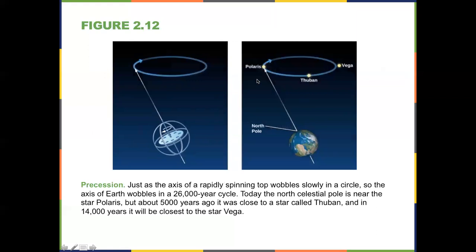As we go around the sun, we're not always pointed at Polaris — we are very slowly wobbling. It takes about 26,000 years to complete the wobble, so we will sometimes be pointed at other pole stars. In 13,000 years, we'll actually be pointed at Vega, and when that happens, it will be summer in December and winter in June and July in Indiana. Thuban was our pole star about 5,000 years ago, and there are others in between before we come back to Polaris.